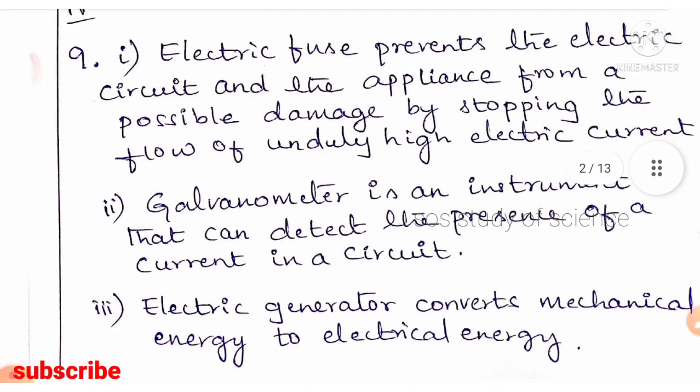For the three-mark question, they gave one-word-answer type: mention the function of the following devices. Electric fuse — it prevents the electric circuit and appliances from damage by stopping the flow of high electric current. Galvanometer — it is an instrument that detects the presence of electric current in a circuit. Electric generator — it converts mechanical energy to electrical energy.